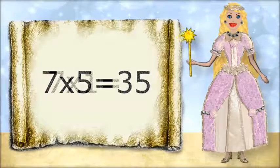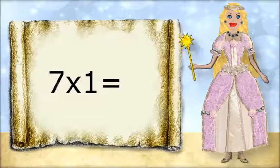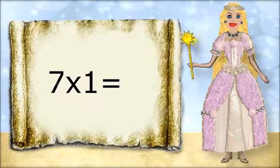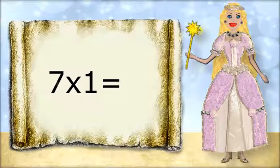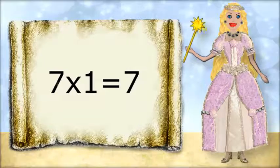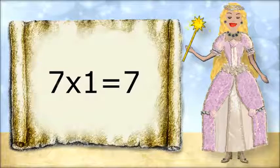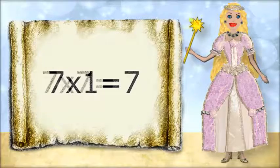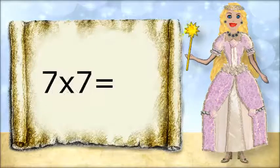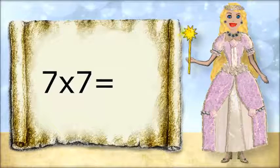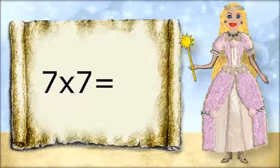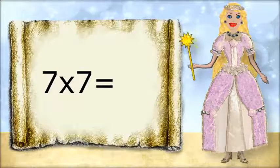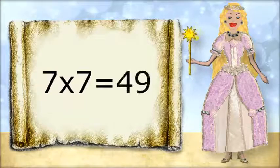7 times 1 equals... 7 times 7 equals... 49.